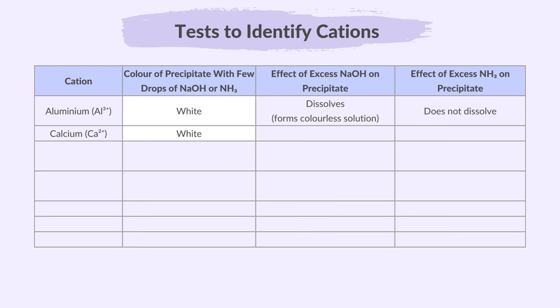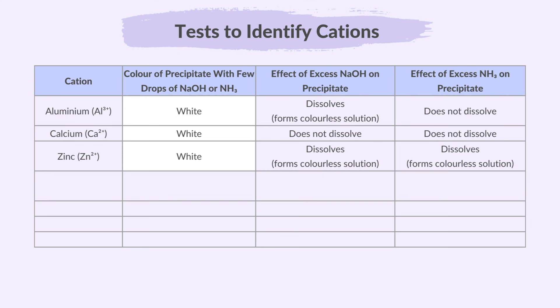For calcium ions, a white precipitate forms which does not dissolve in excess sodium hydroxide or ammonia. For zinc ions, a white precipitate forms, dissolving in both excess sodium hydroxide and ammonia to form a colourless solution.